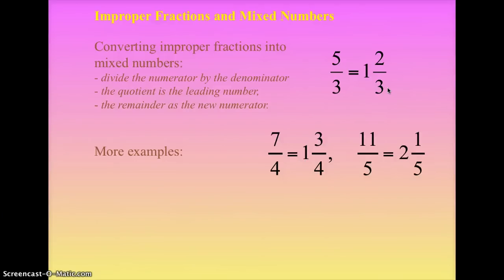Here's another one. Eleven-fifths. Again, take eleven, divide by five. So eleven divided by five is two with the remainder of one. The remainder goes back over the five. So eleven-fifths is equal to two and one-fifths.